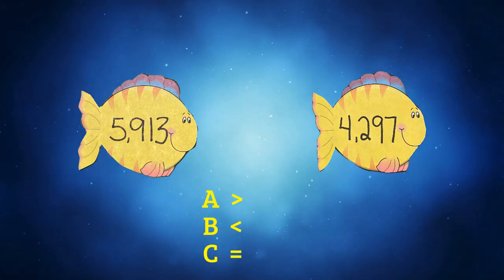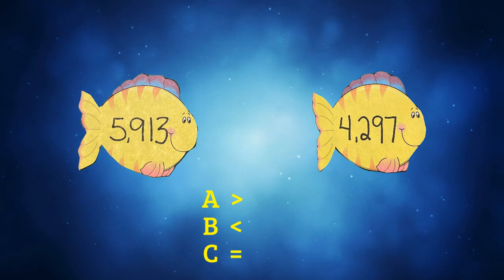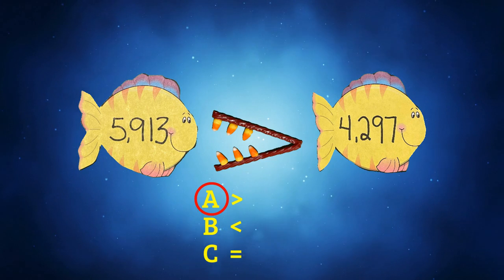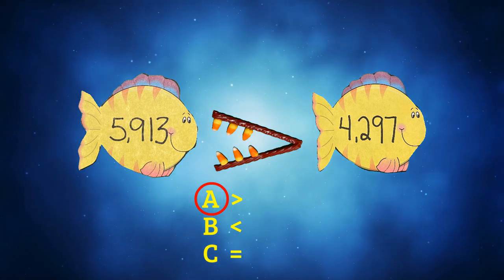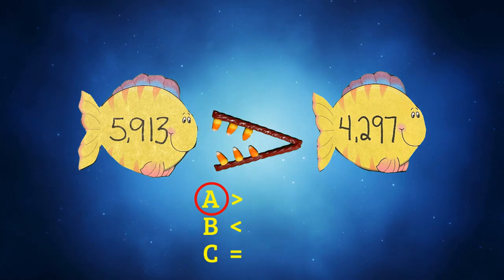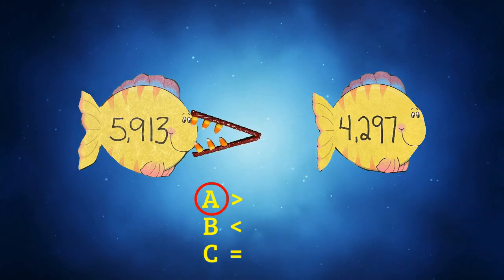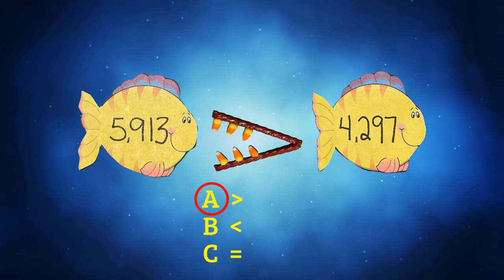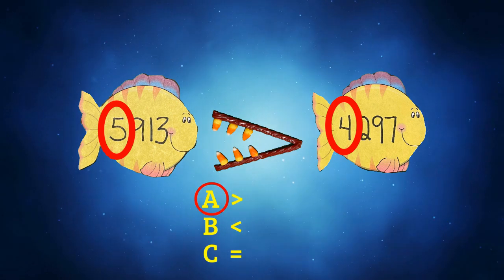Is 5,913 greater than, less than, or equal to 4,297? Pause the video and write down your answer. If you said that the answer was A, that 5,913 is greater than 4,297, then you are correct. We have to make sure that we're eating the greatest number, which is 5,913. As you can see, after we look at the thousands place, we are correct.